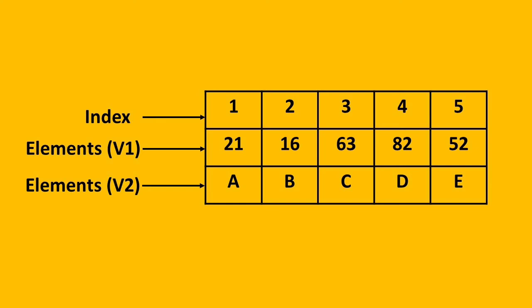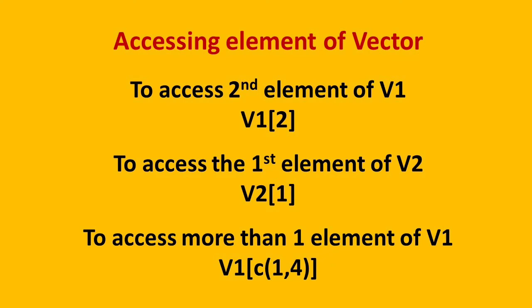Say for example, if we want to access the second element of vector v1, in that case, we need to write the syntax like v1 square bracket 2. Similarly, for accessing the first element of vector v2, we need to write v2 square bracket 1.